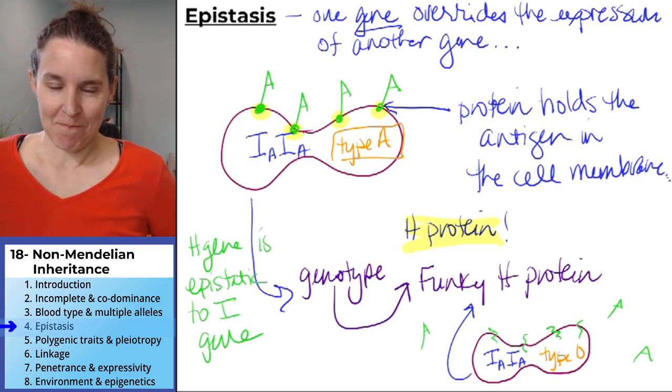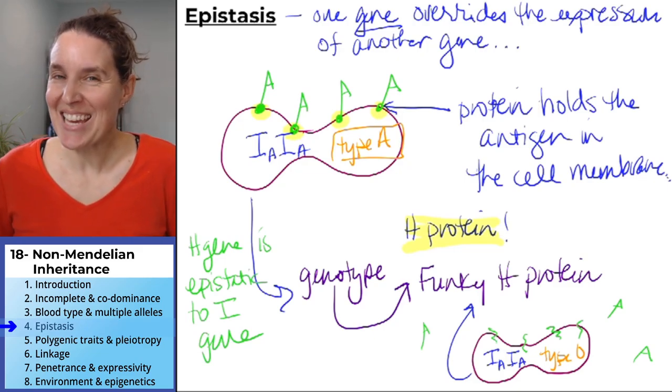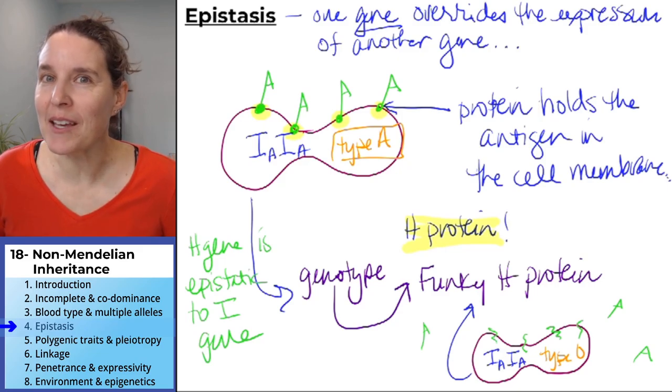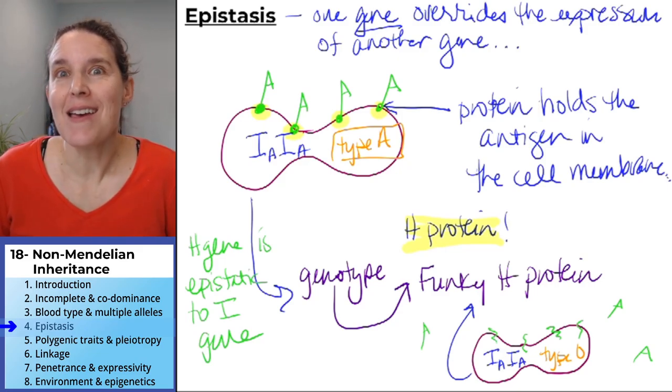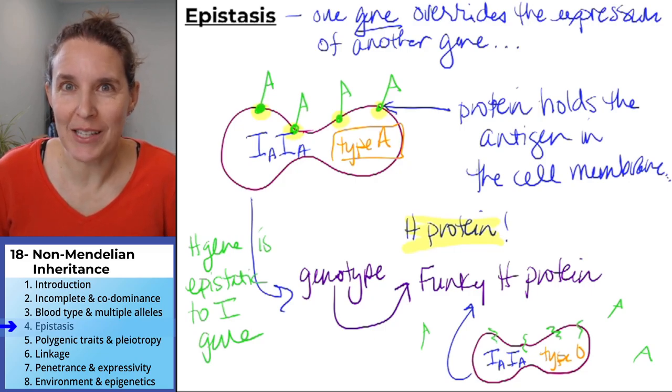Okay, how do you feel about that? Can you see how we're getting a little more complicated? It's getting a little more complicated in here. Next up, polygenic traits and pleiotropy.